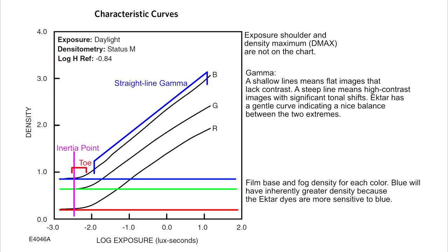Because Ektar is more blue sensitive and because exposure starts quickly, even if you underexpose part of the negative — which taking a picture with shadows effectively does — Ektar will still get some detail in that underexposed shadow area very quickly, further contributing to shadow recoverability.